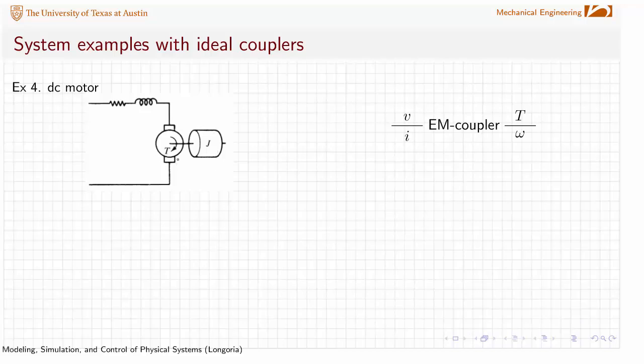This symbol actually is usually specific to permanent magnet DC motors where the magnetic field is formed by permanent magnets. Sometimes you'll see different symbols where they show the little magnets.